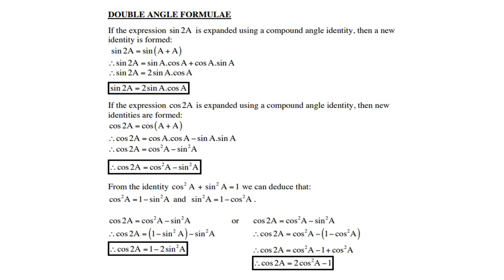So the rule is: cos of 2a equals cos² a minus sin² a. From the identity cos² a + sin² a = 1, we can deduce that cos² a = 1 minus sin² a, and sin² a = 1 minus cos² a. Substituting gives the alternate forms: cos 2a = 1 minus 2 sin² a, or cos 2a = 2 cos² a minus 1.